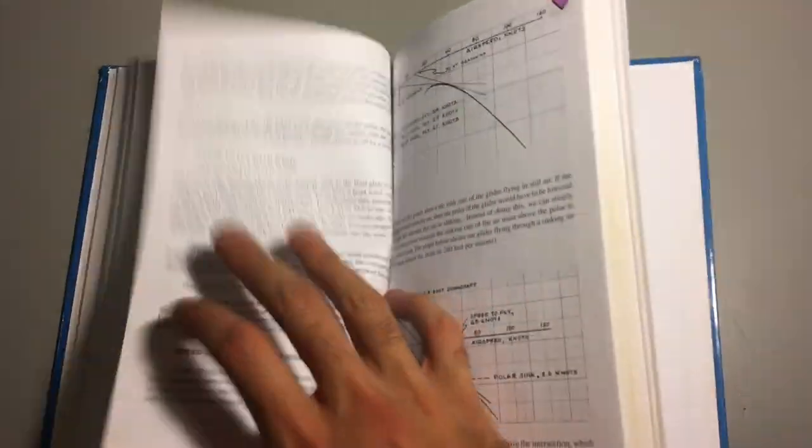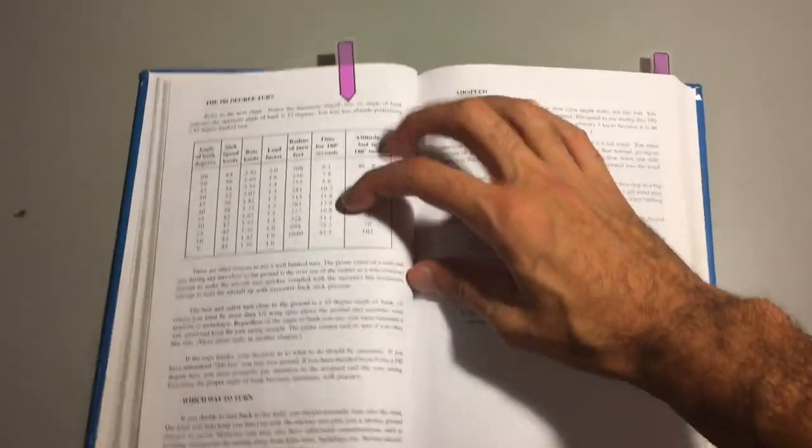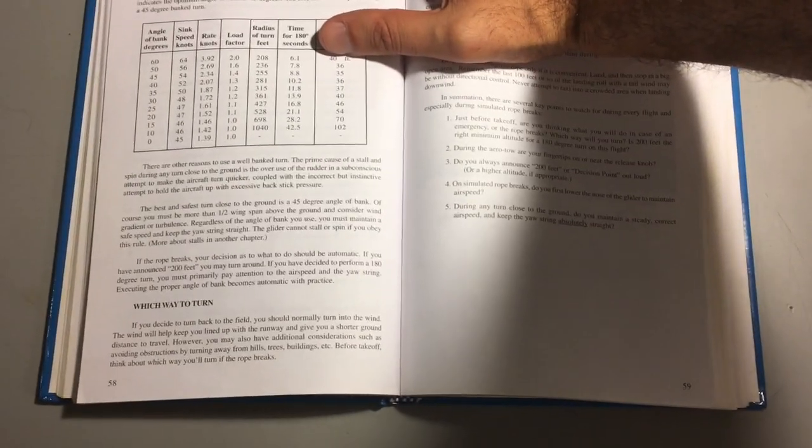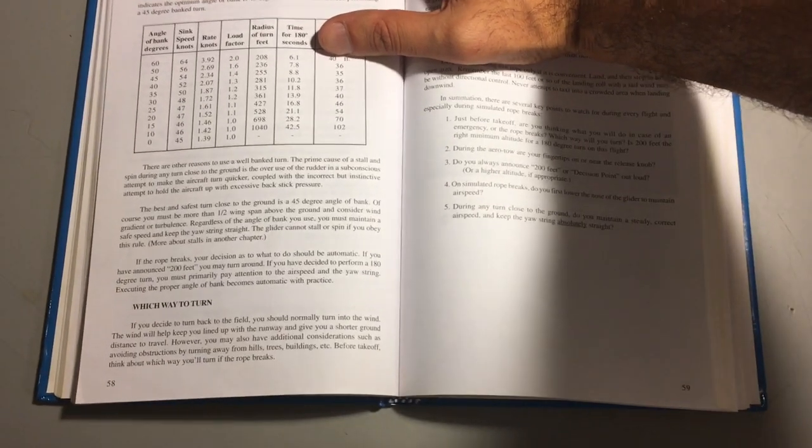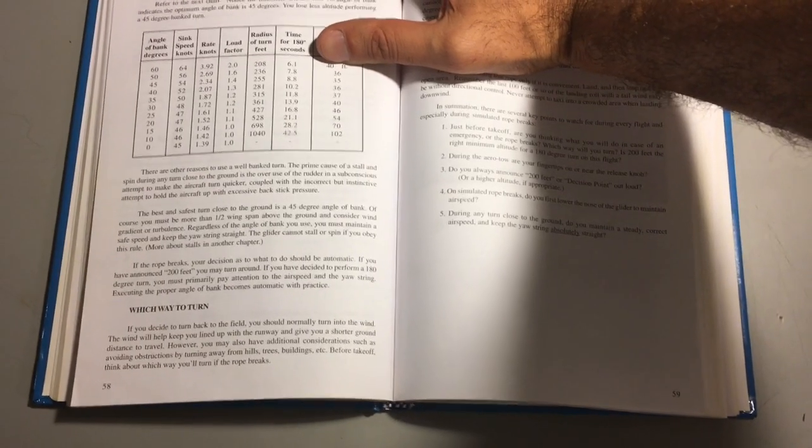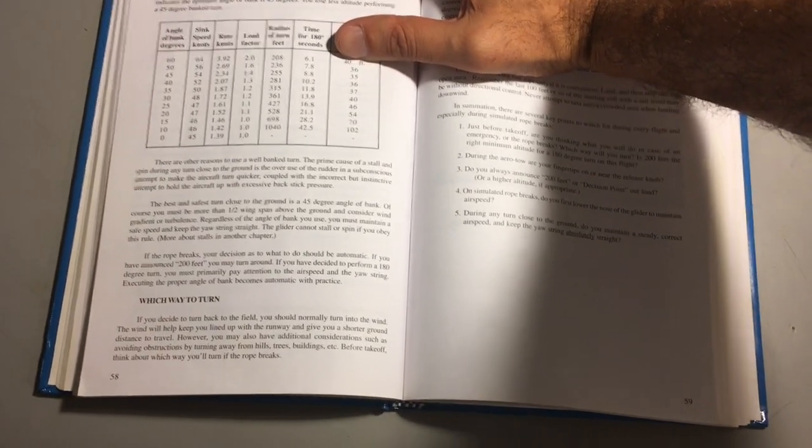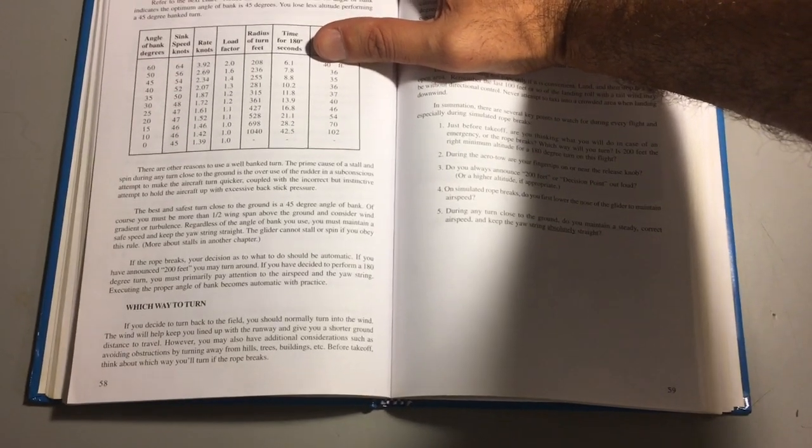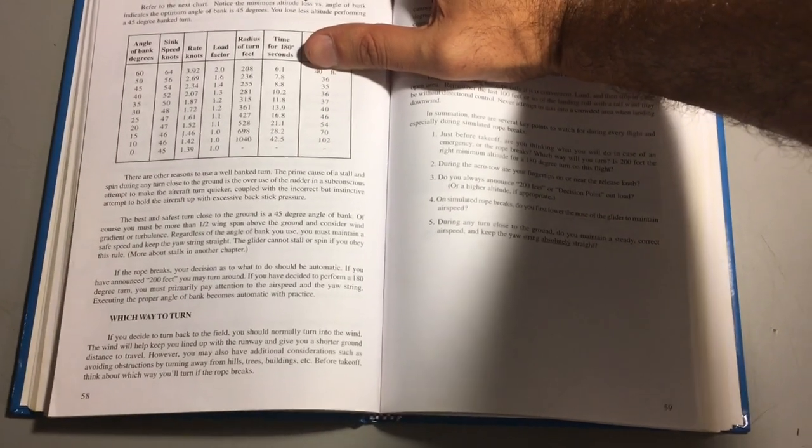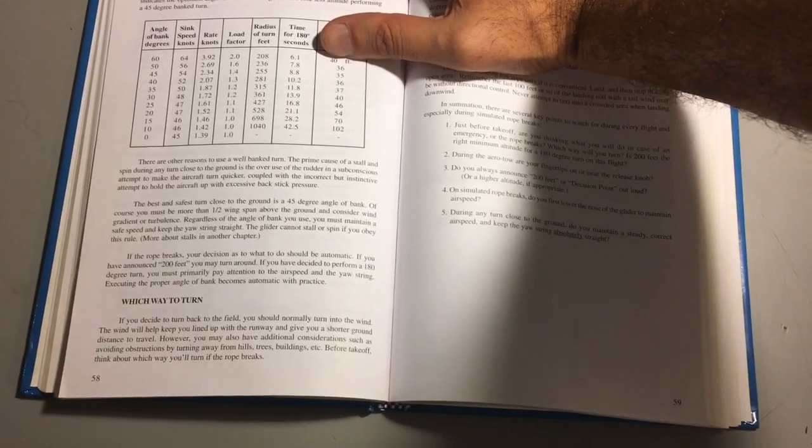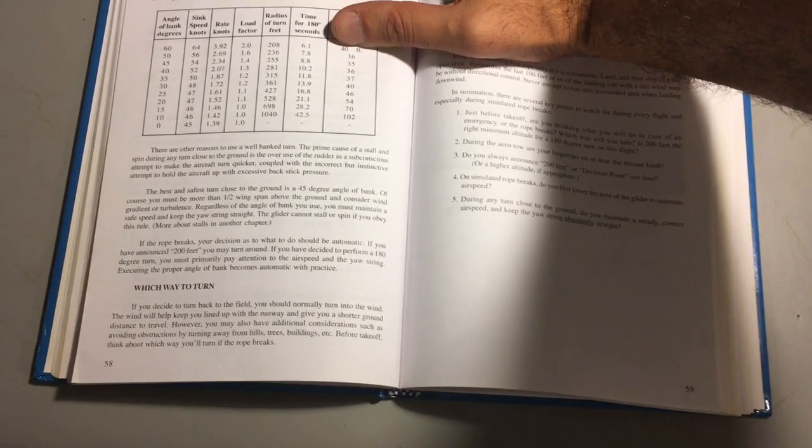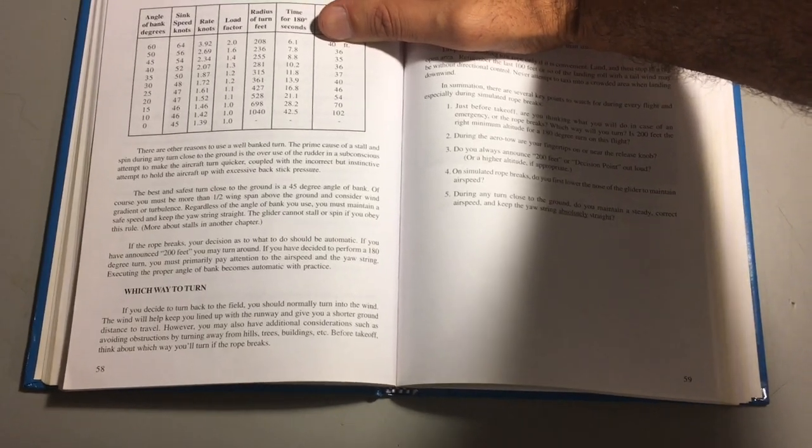If we turn to the section on rope break it essentially discusses the procedure you should do if the rope breaks on tow. If you're not familiar with gliders, the way we get in the air is we've got a rope attached to a tow plane that gets us up to altitude and then we release. On a powered airplane you're taught to have at least 800 feet altitude AGL before you turn back to the field, and that's because your powered airplane is very low performance. On a glider you can turn back to the field as low as 200 feet AGL.